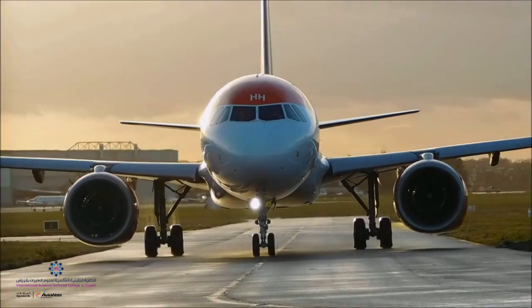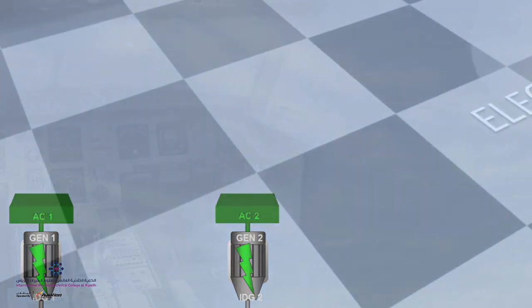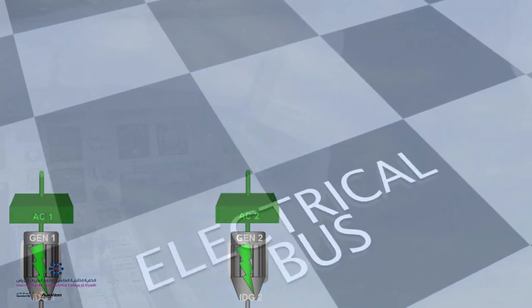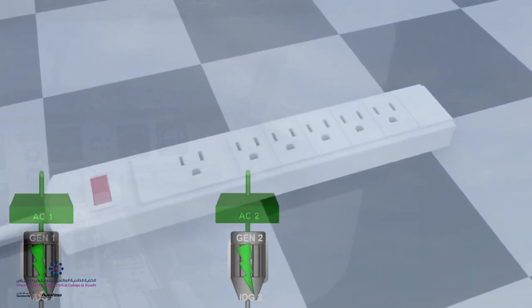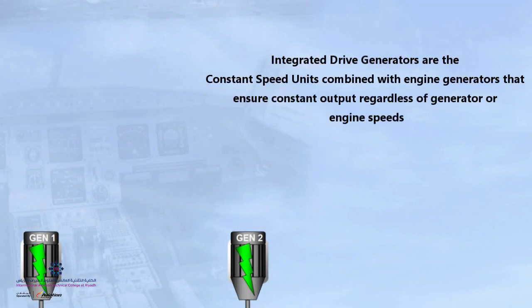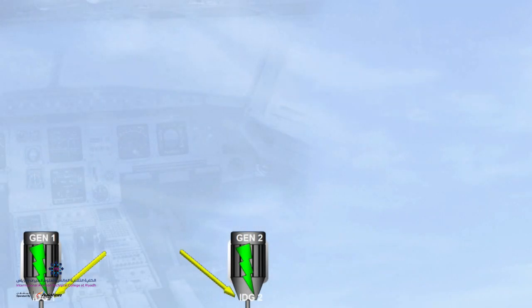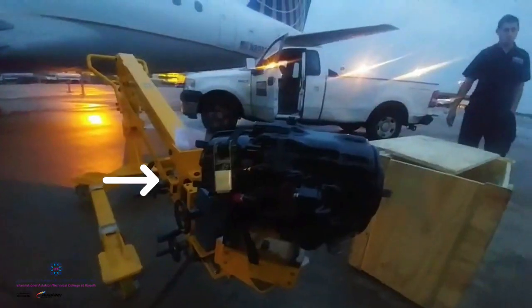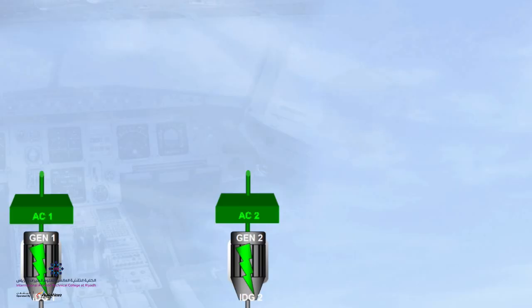Turbofan engine generators provide electricity through the AC bus. In order to ensure constant output, generators on a complex jet aircraft are connected to the integrated drive generators on each engine.